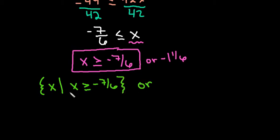Or you may be asked to write your answer in interval notation. In interval notation, because it includes it, we would start at a bracket at negative 7 sixths as our furthest value to the left, and then we would write everything to positive infinity.